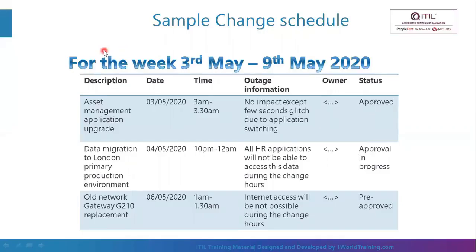A change calendar allows assignment of resources and understanding of resource allocations across various changes, visibility into whether changes have been approved, and is a good item to report to stakeholders regularly. For example, a weekly change calendar for a given week lists changes along with their timing, outage information, ownership, and status.